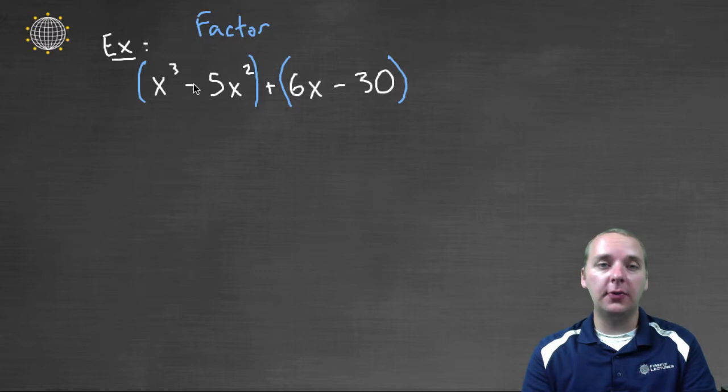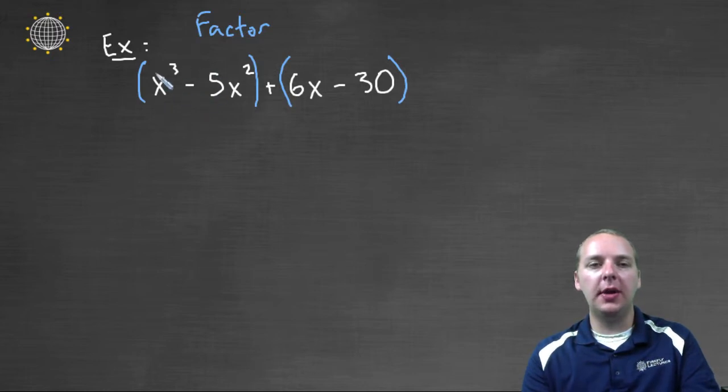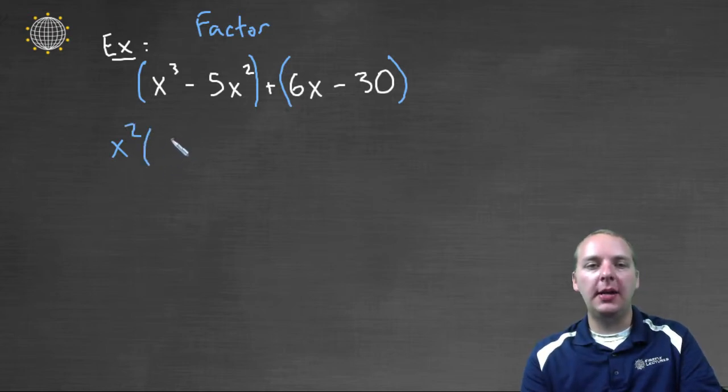Then we're going to factor the first group, and we're going to factor the second group using GCFs. Looking at the first group here, x cubed minus 5x squared, those have a common factor of x squared. We'll pull that out, and we'll have remaining an x minus 5.